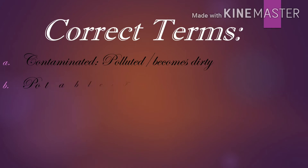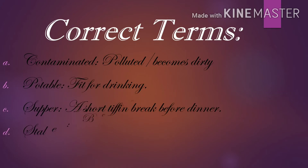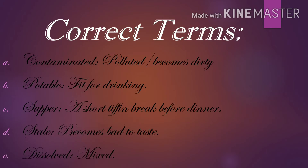Now let us learn the correct terms. Number A: contaminated means polluted or become dirty. Number B: potable means fit for drinking. Number C: supper is a short tiffin break before dinner. Number D: stale means food that has become bad to taste. Number E: dissolved means mixed.